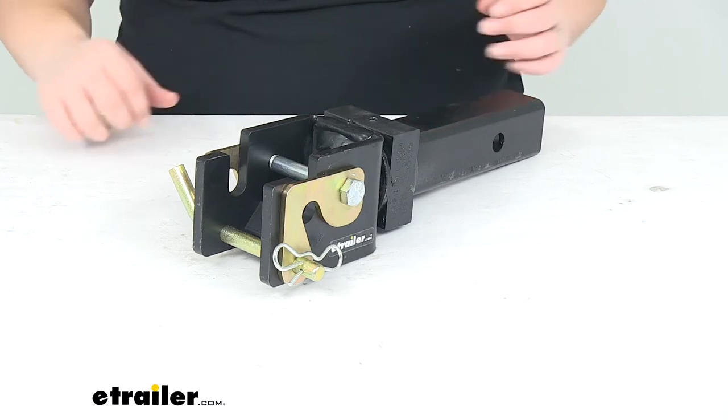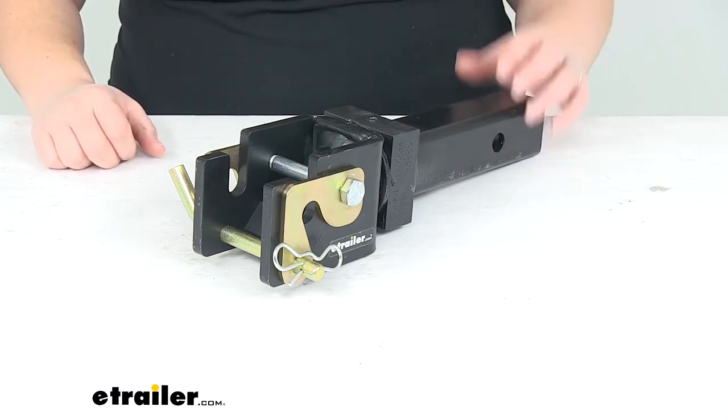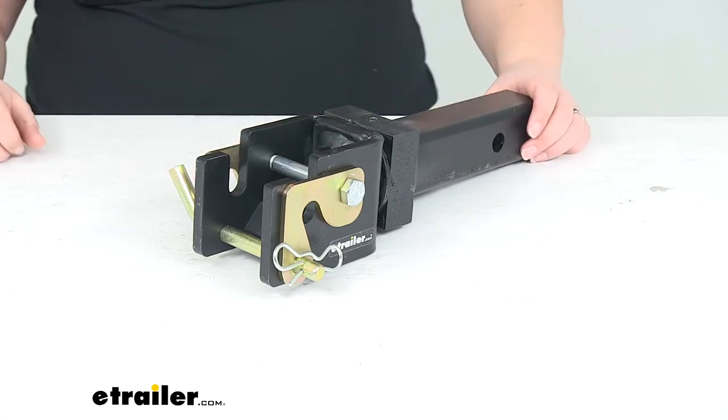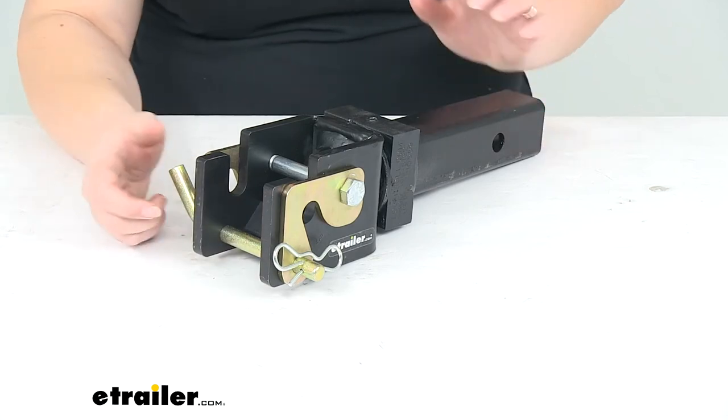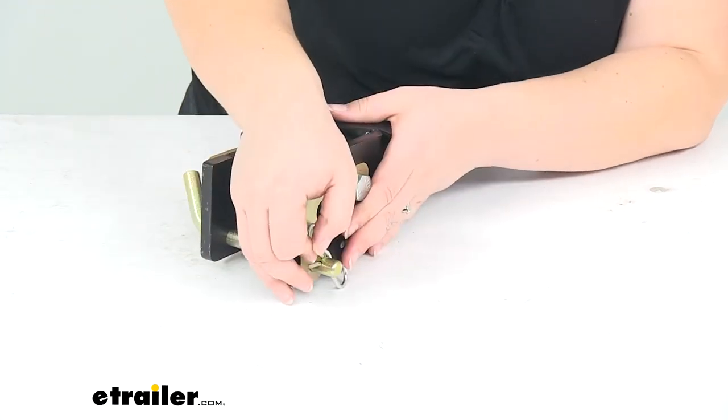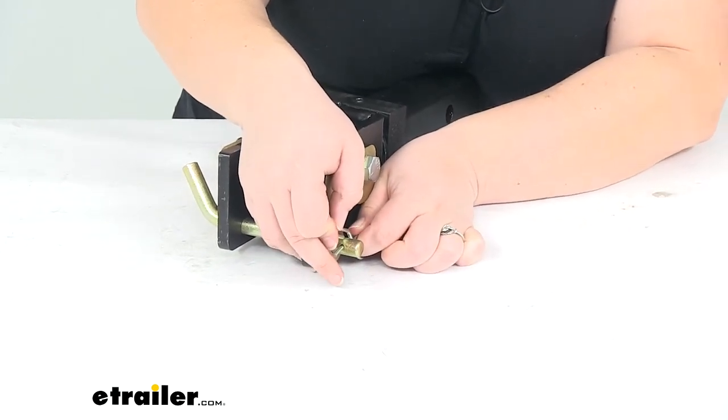It is made out of a steel alloy so it's gonna be very strong and durable, has a black paint to help keep rust down to a minimum, and it does come with this pin to keep our coupler in place. It's kind of like this little bow tie looking design here that kind of locks that in place.